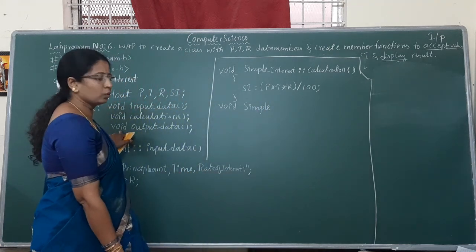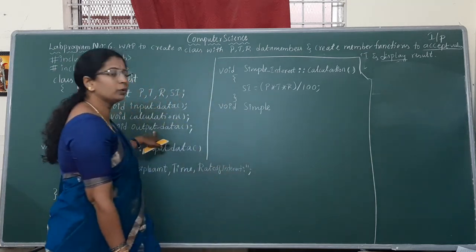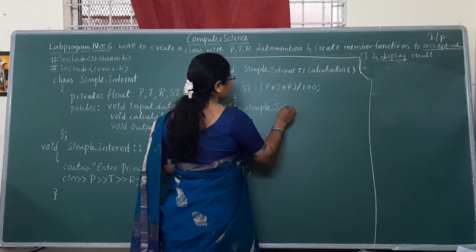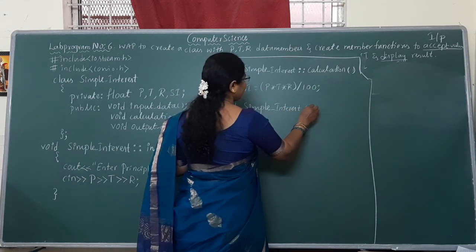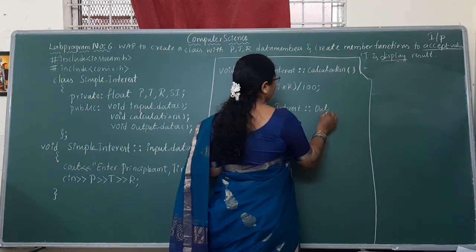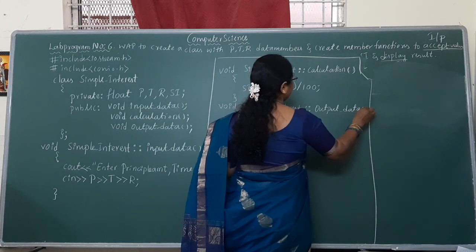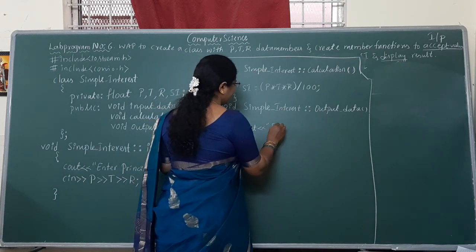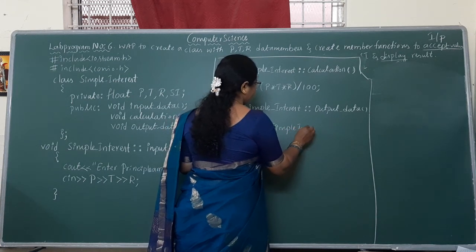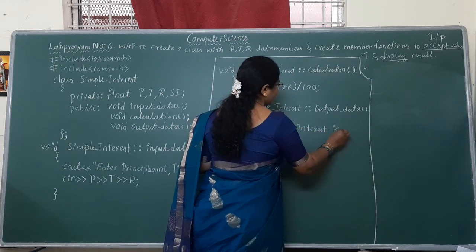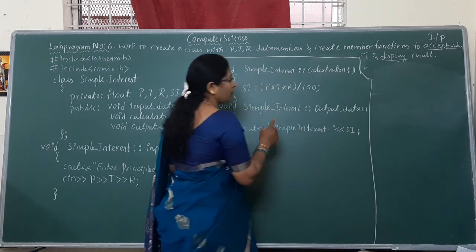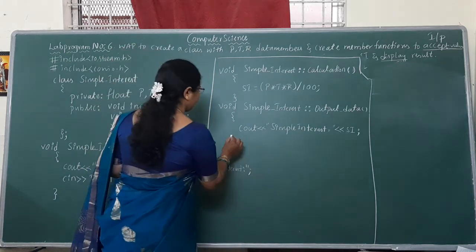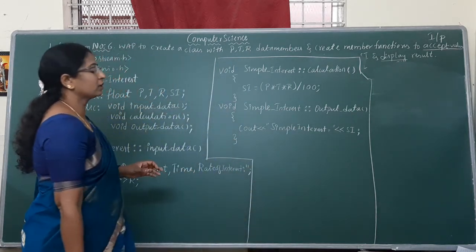Output function — return type is void, function name is output_data. This output_data belongs to which class? Simple_interest. So after the return type, write the class name simple_interest, then the scope resolution operator, then output_data. In the body, output: 'Simple interest = ' followed by the value present in the variable SI. We have only a single output statement here. This completes defining the member functions outside the class.